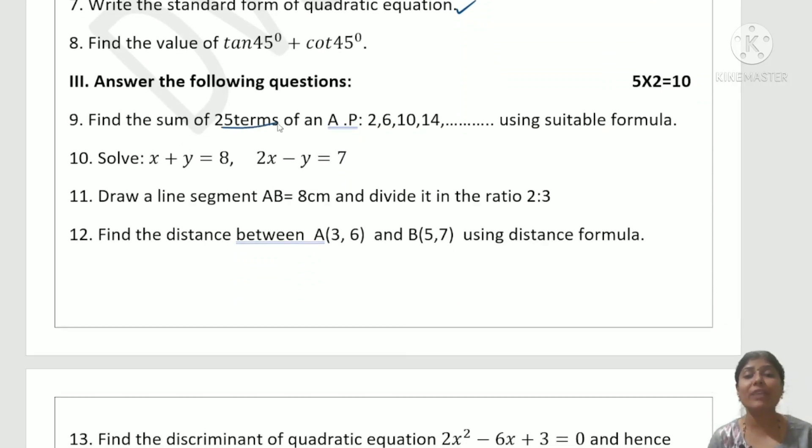Two marks questions: Find the sum of 25 terms using the S_n formula. Solve for x and y using elimination method, substitution method, or cross multiplication method.